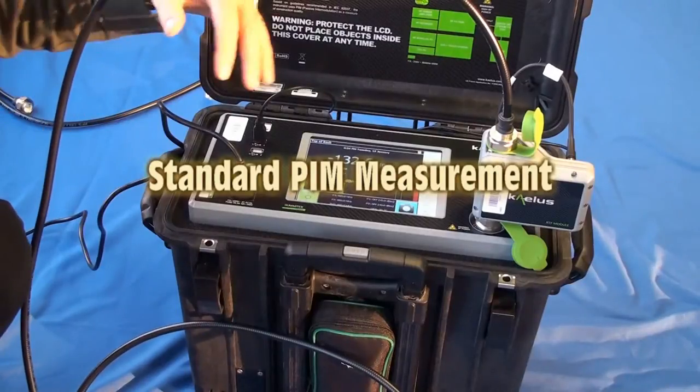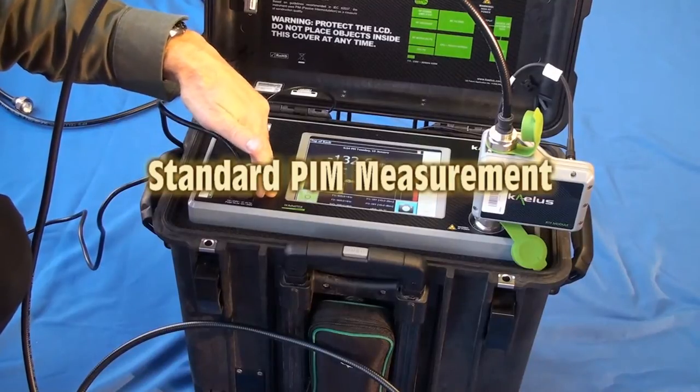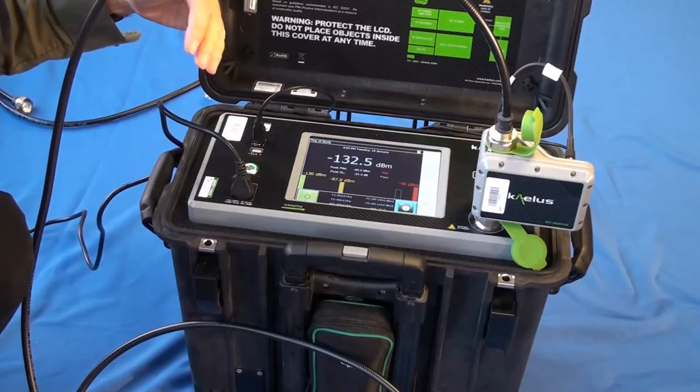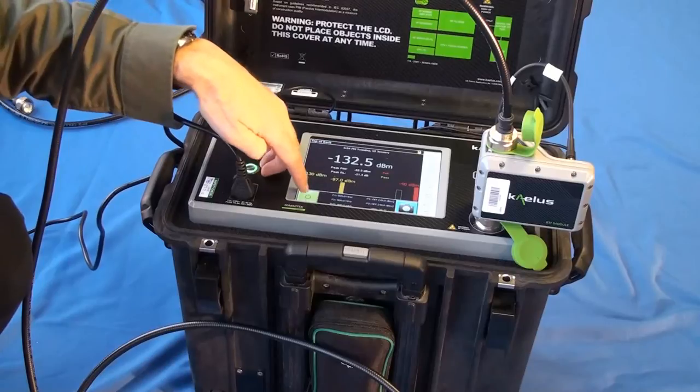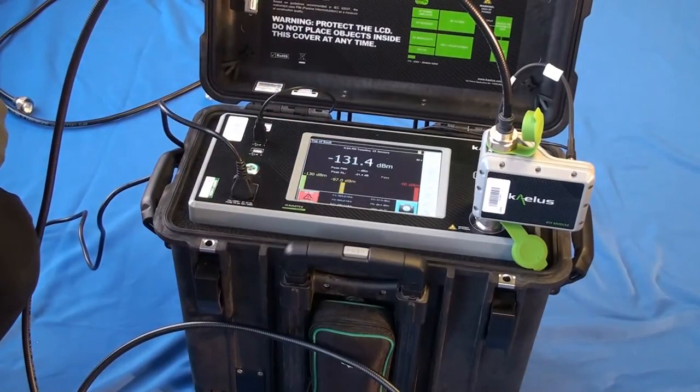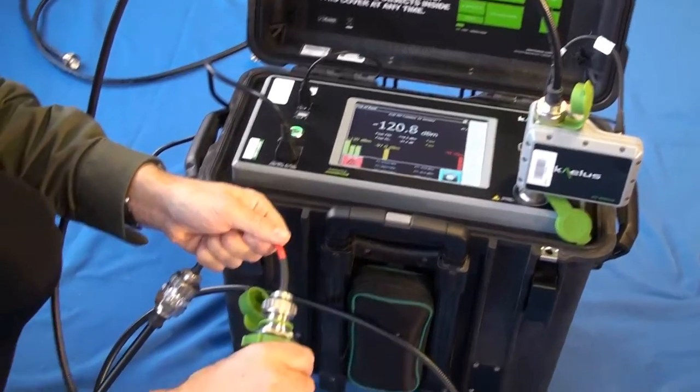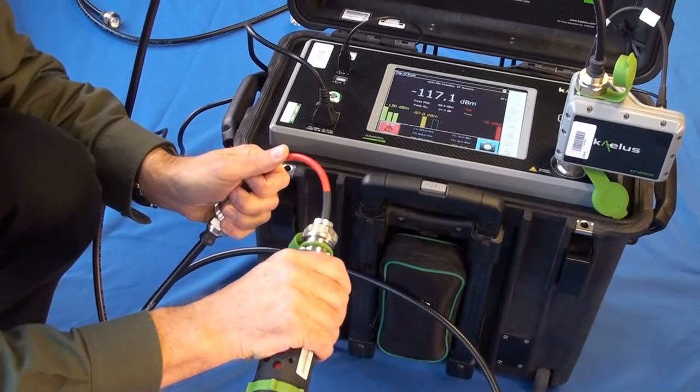So after the RTF measurement has located problems and they've been fixed, the final test has to be a standard PIM measurement because this is the only way that you can measure the stability of the system by tapping and twisting. If we make the measurement, it can look good, but then with just a little bit of movement in a cable, you can see this instability there.